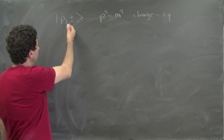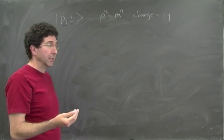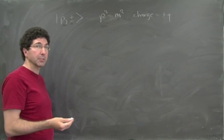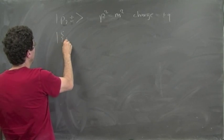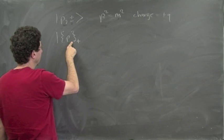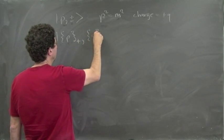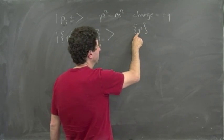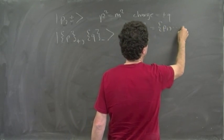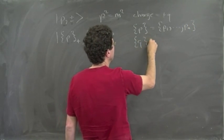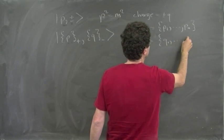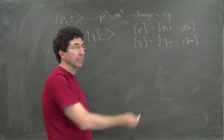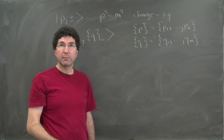These are the one-particle states — a state of one particle with either plus or minus charge. We want to be able to describe states with any number of positively and negatively charged particles. The most general state has a set of momenta p for particles with plus charges and a set of momenta q for particles with minus charges. Here p means a list of momenta p1 through pn, and q means a list q1 through qm. n and m don't have to be the same — we can have any number of positively and negatively charged states.